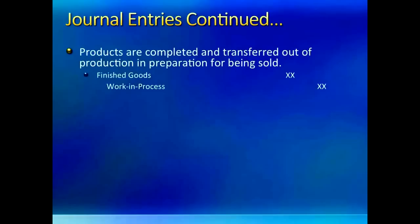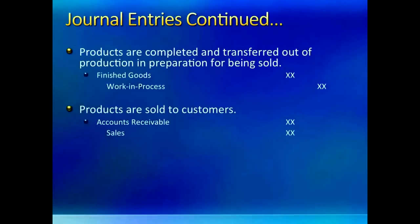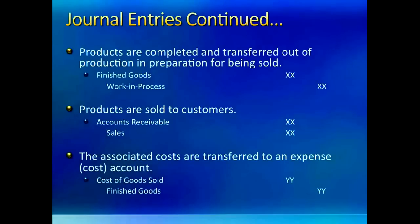When finished goods are sold, we need two journal entries: one to record the sale and a second to take cost of goods sold out of finished goods so it can go into the income statement. For the sale entry, we debit accounts receivable or cash or bank and credit sales revenue. The final entry is to take cost of goods sold out of finished goods and put it into the income statement whenever the time comes.